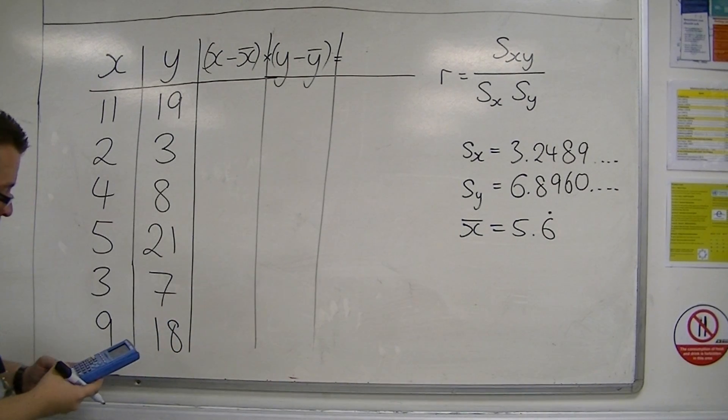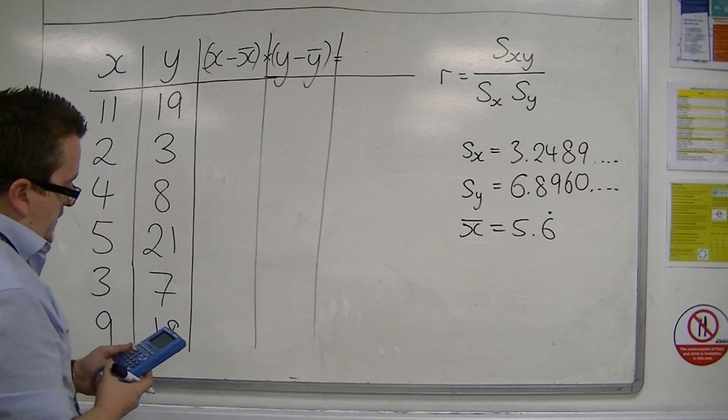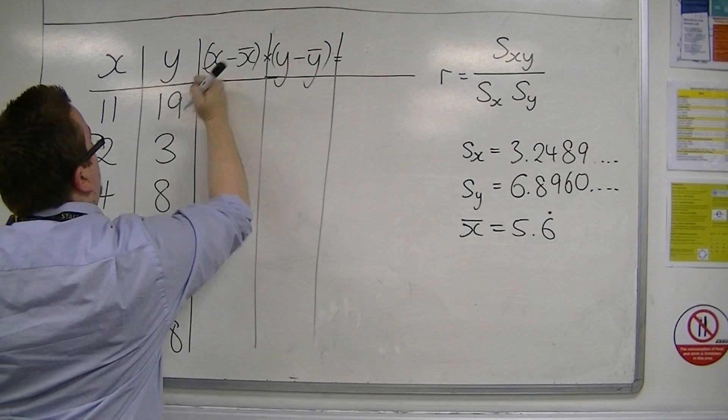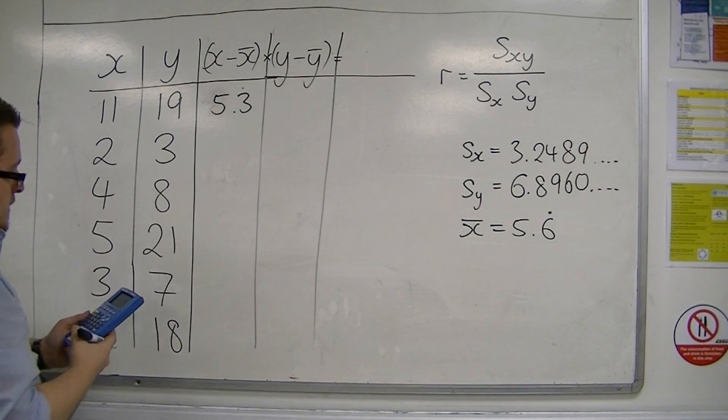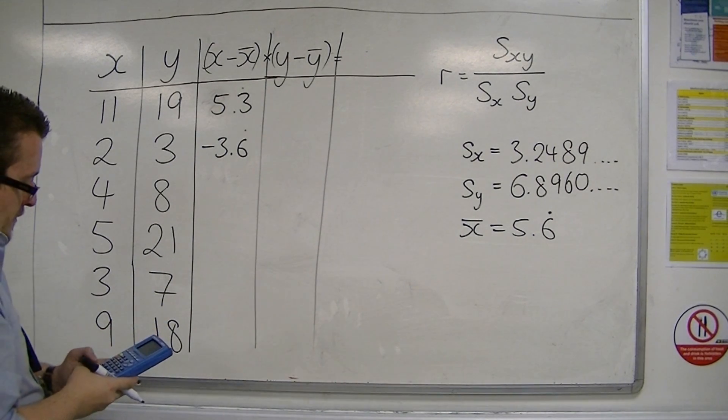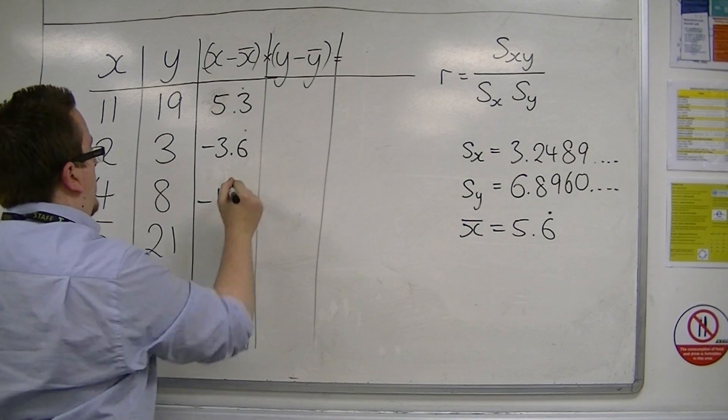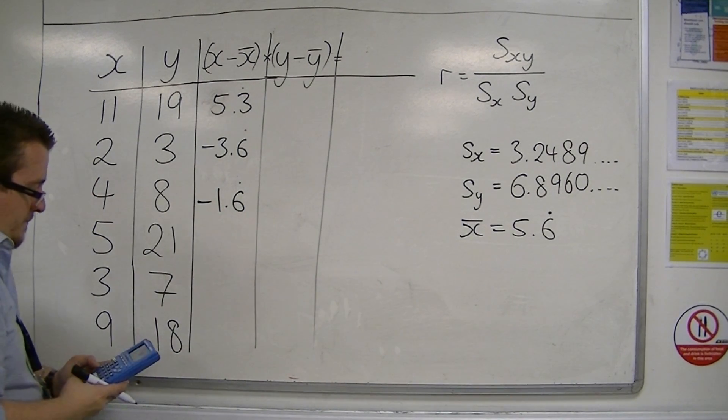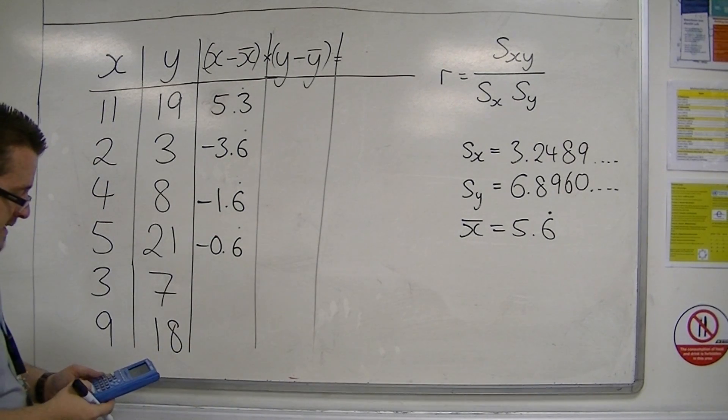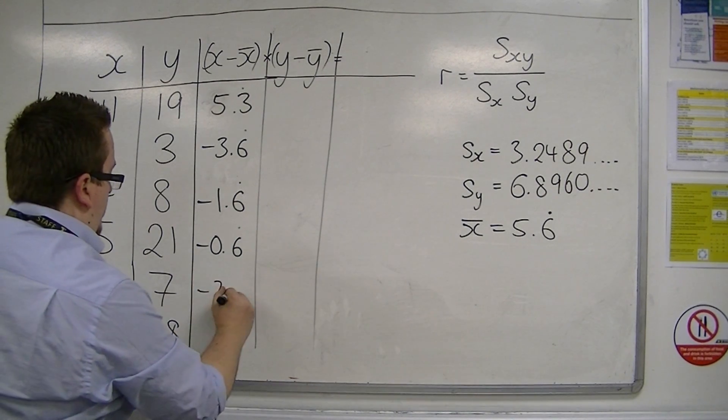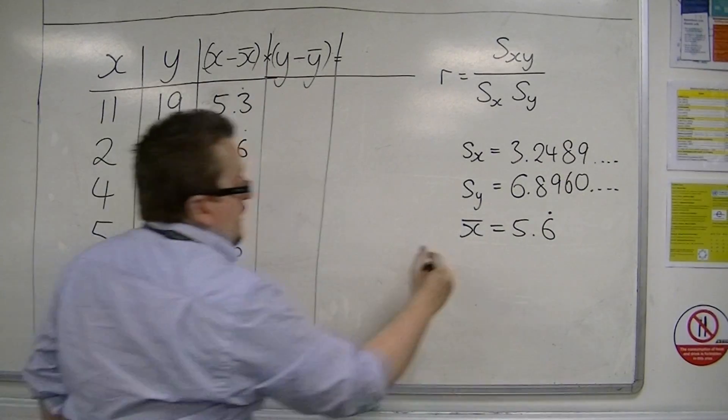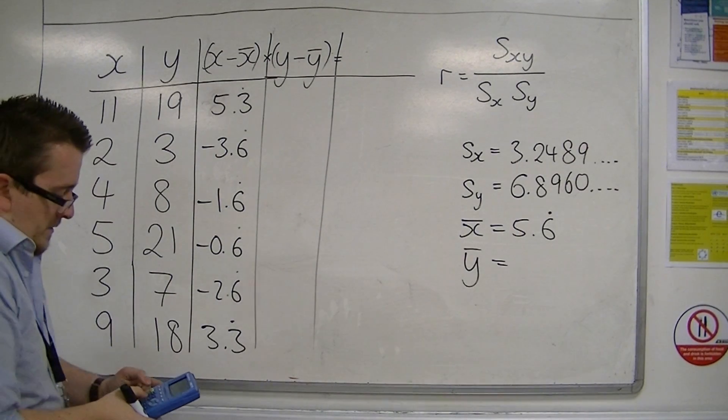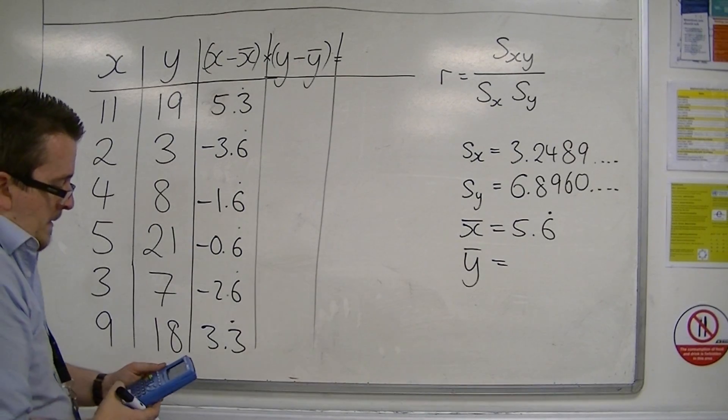So we're going to have 11 take away 5.6 recurring which is 5.3 recurring, then we're going to have 2 take away 5.6 recurring so minus 3.6 recurring, 4 take away 5.6 recurring so that's minus 1.6 recurring, five take away 5.6 recurring minus 0.6 recurring, then 3 take away 5.6 recurring minus 2.6 recurring, and then 9 take away 5.6 recurring is 3.3 recurring.